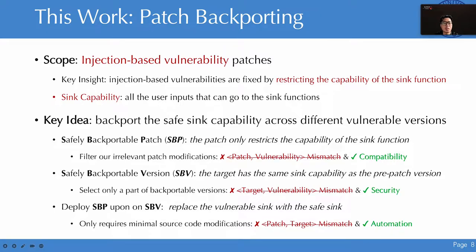To address these challenges, we studied patches for injection-based vulnerabilities and observed that these vulnerabilities are usually fixed by restricting the capability of the sink function. Thus, we propose sink capability, which consists of all user inputs that can reach the sink functions. We can then fix the same vulnerability on other versions by backporting the safe sink capability. First, we identify and transform the safely backportable patch (SBP) to ensure compatibility after patch deployment, requiring SBP only restricts the sink function and contains no irrelevant patch modifications, addressing the mismatch between patch and vulnerability.